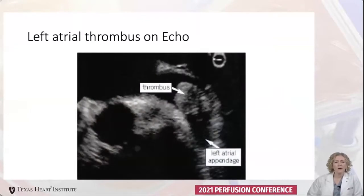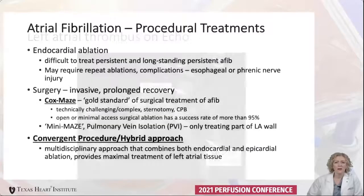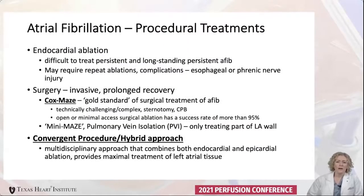This echo shows the left atrial appendage on the right of the screen with thrombus within it, which is what we typically see on an echo. Most procedures for AFib target treatment of the left atrial wall, because it's a critical part of initiating and maintaining persistent AFib.